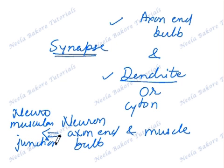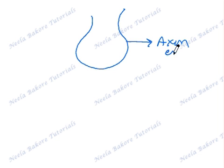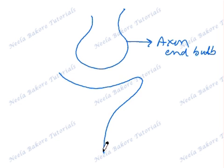Let us see the structure of a synapse. In a synapse, there is axon end bulb, and we are taking a dendrite here. So this part represents the dendrite of the other neuron.